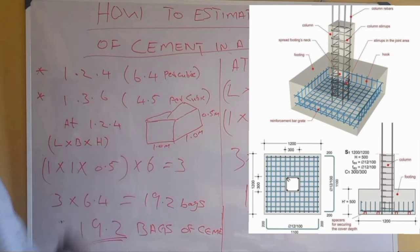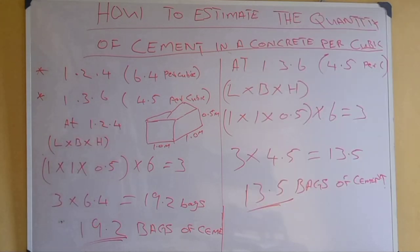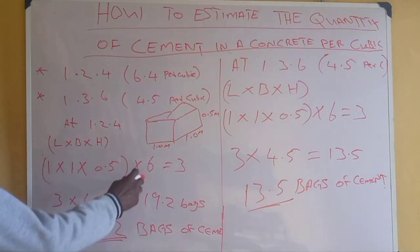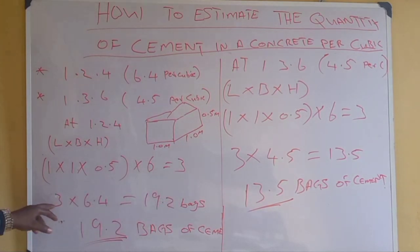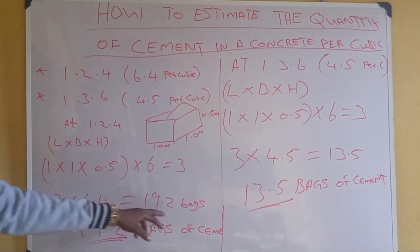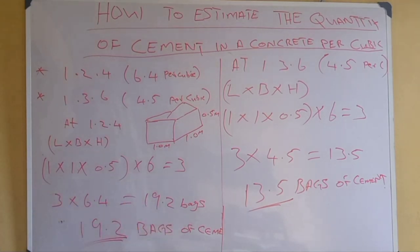The breadth is 1 meter and the height is 0.5 meter. What you have to do now is length times breadth times height. 1 times 1 equals 1 times 0.5, which equals 0.5. And I have 6 number of columns inside the structure, inside the building. 0.5 times 6 equals 3. 3 times 6.4, which is per cubic meter, equals 19.2 bags of cement to be used for that 6 column pieces.